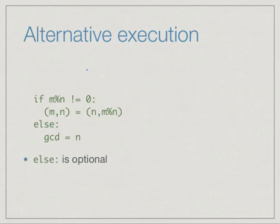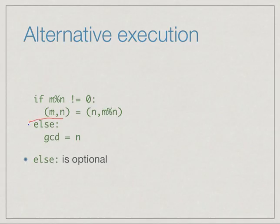Quite often we have two alternatives: one to be taken if the condition is true, and the other if it is not. For example, if it is likely to rain ensure the umbrella is in the bag, else ensure it is not. This is indicated using the keyword 'else', again with a colon, and nesting to indicate what goes into the else. The if and else should be at the same level. The else is optional — we could have an if without an else.